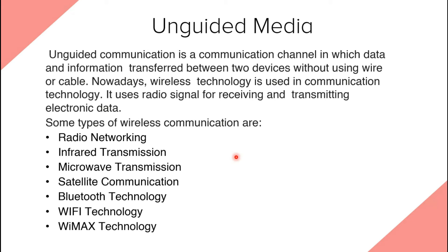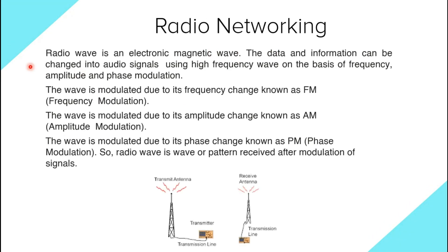Now it's time to learn about unguided media. Unguided communication media is the communication channel in which data and information are transferred between two devices without using wire or cable. Nowadays wireless technology uses radio signals for receiving and transmitting electronic data. The types we are going to discuss are radio networking, infrared transmission, microwave transmission, satellite communication, Bluetooth technology, Wi-Fi technology, and WiMAX technology.